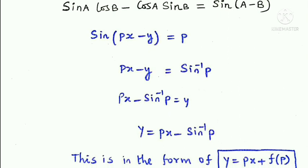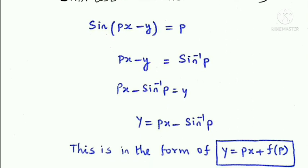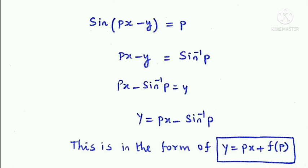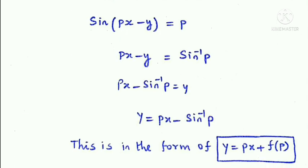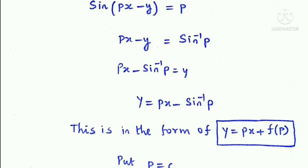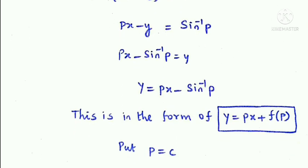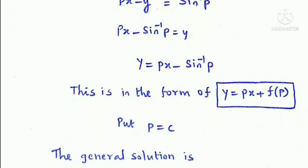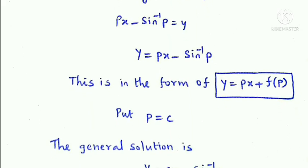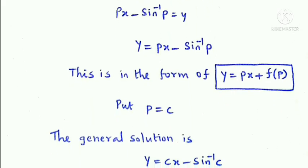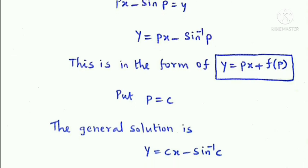This is in Clairant's form, y = px + f(p). Putting p equal to c, the general solution is y = cx - sin⁻¹c.